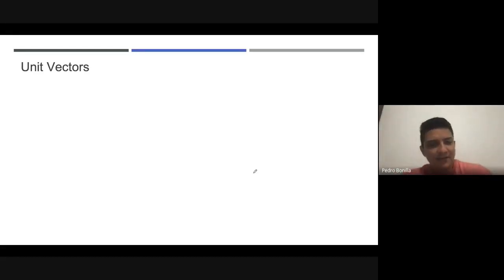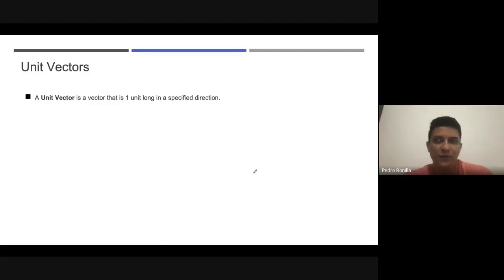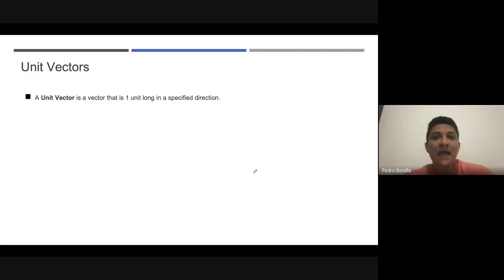Hello guys, it is good to talk to you. The purpose of this video is to explain the concept of unit vectors. A unit vector, as the name says, is a vector that is one unit long in a specified direction. What matters about unit vectors is not the magnitude but the direction.